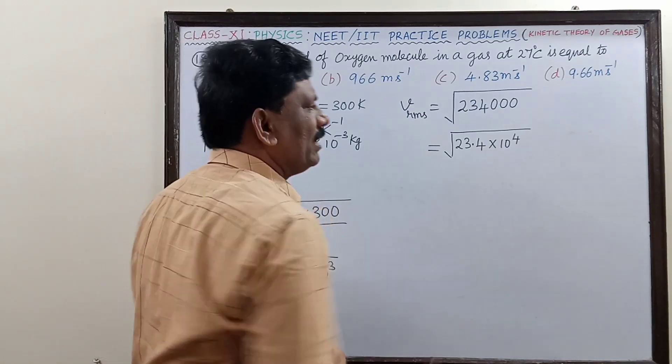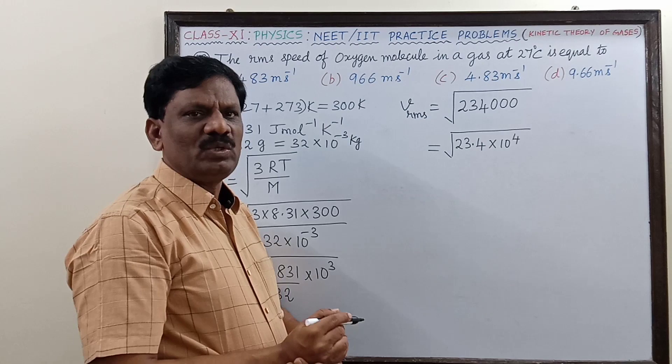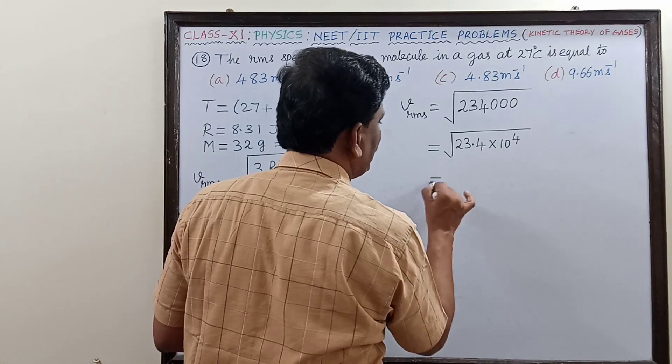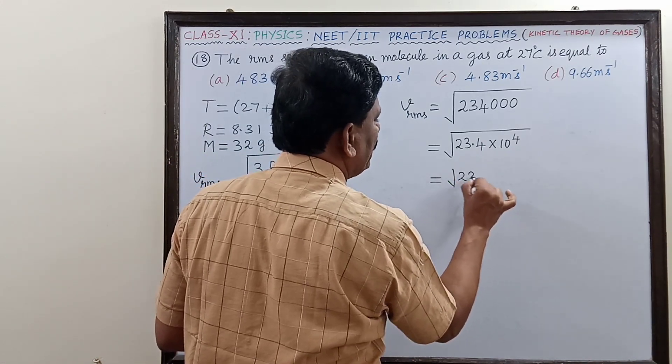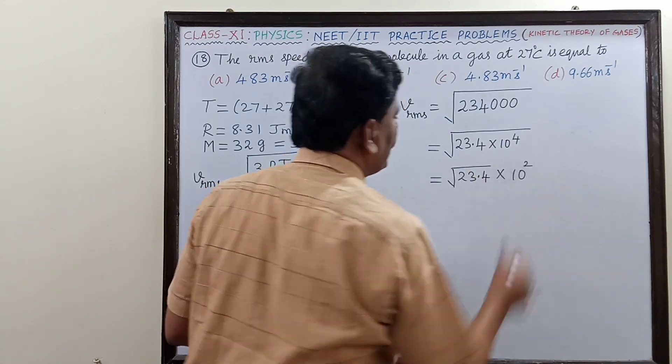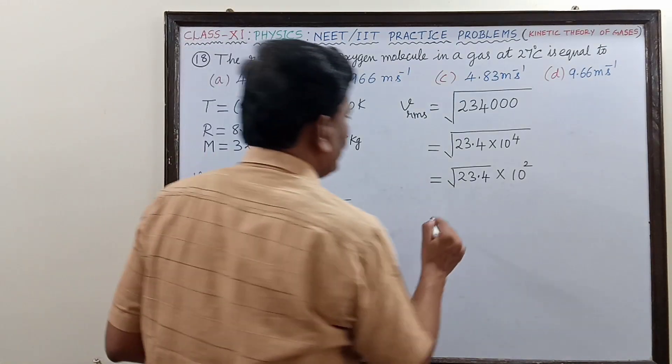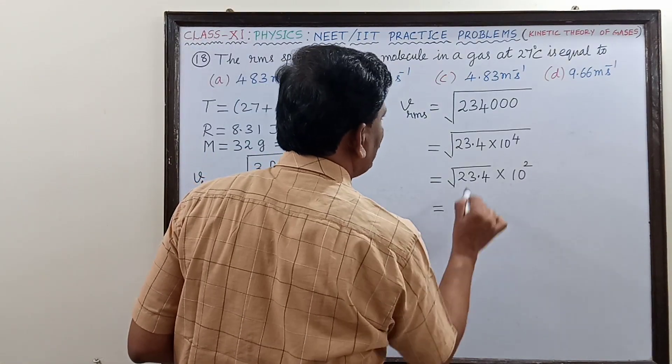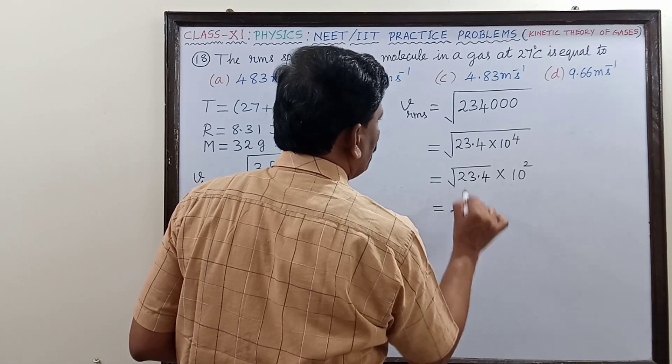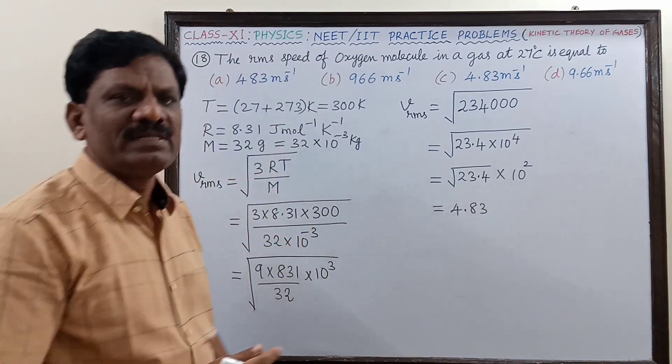If you take the square root of 10 power 4, it will come out as 10 power 2, which is 10 squared. So this is equal to square root of 23.4 into 10 squared. We have to find out what is the square root of 23.4. This is equal to 4.83.